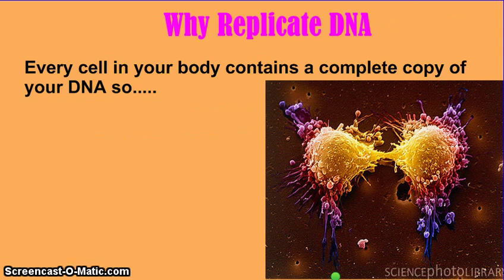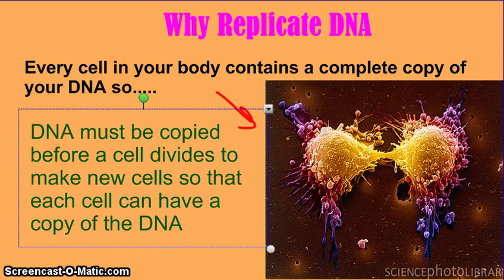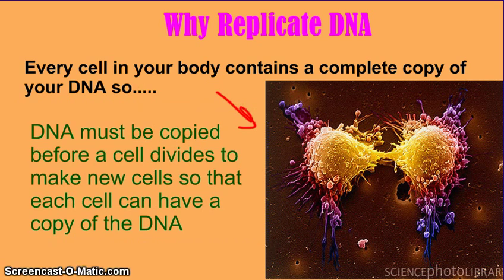Why do we need to replicate DNA? Every cell in your body contains a complete copy of the DNA. So if we look at these two cells here, these two cells have recently divided — they started out as one cell and divided into two. In order to have two cells, the DNA must be copied before that cell can divide to make new cells, so that each cell can have a complete set of the DNA.